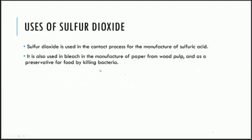When we look at sulfur dioxide, which is basically an oxide of sulfur, sulfur dioxide is mainly used in the contact process. The contact process is a fancy word for the process that manufactures sulfuric acid. You would have found sulfuric acid widely spread in your laboratory rooms, and it is an example of a strong acid. Sulfur dioxide is also used to bleach in the manufacture of paper from wood pulp and as a preservative for killing bacteria in food.